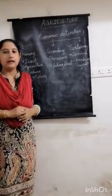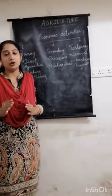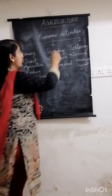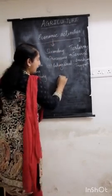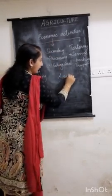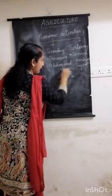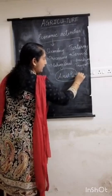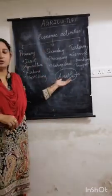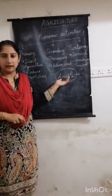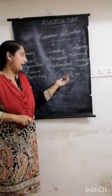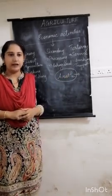The land which is suitable for agriculture is called arable land — land suitable for cultivation. Now we shall see about different types of culture.